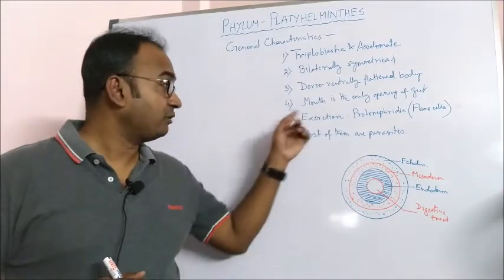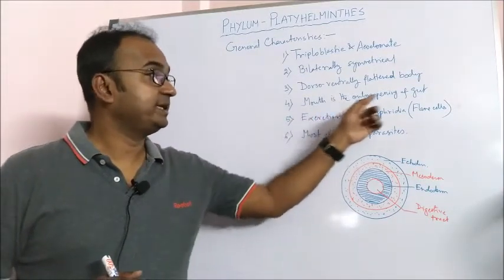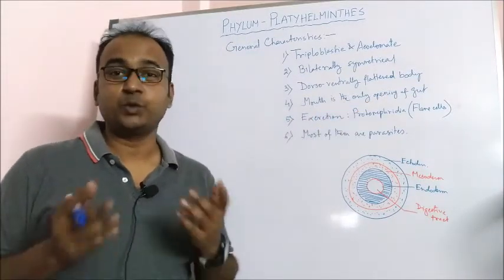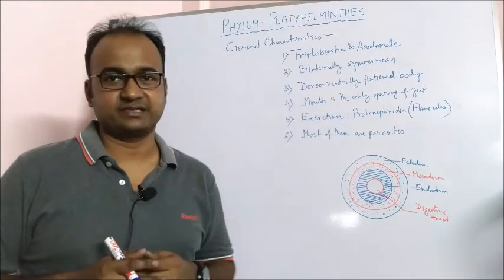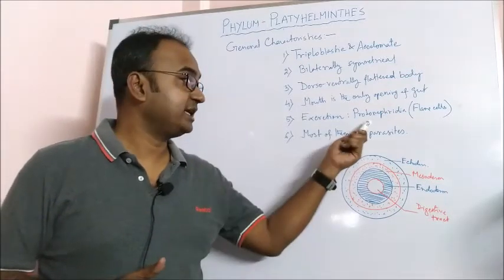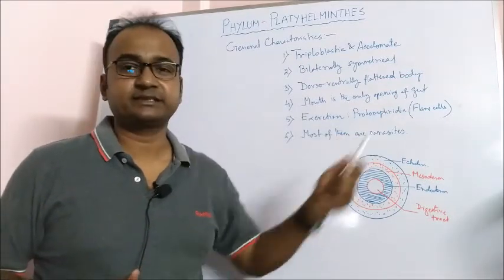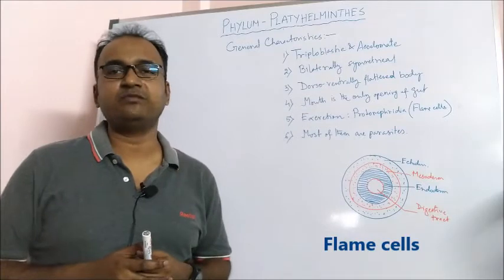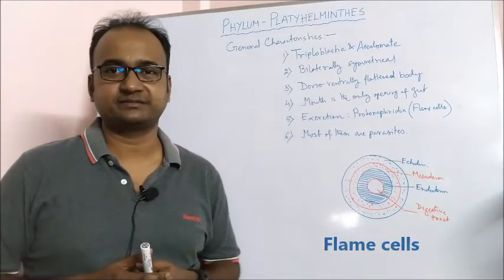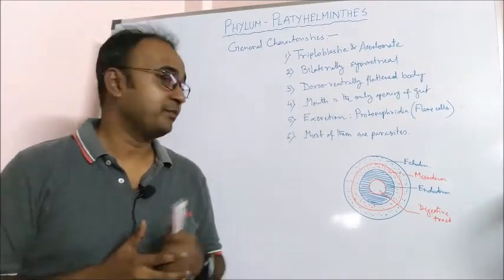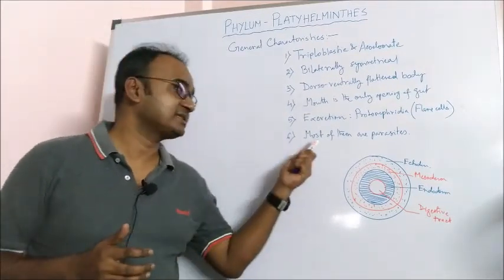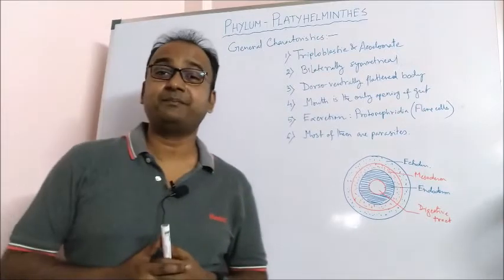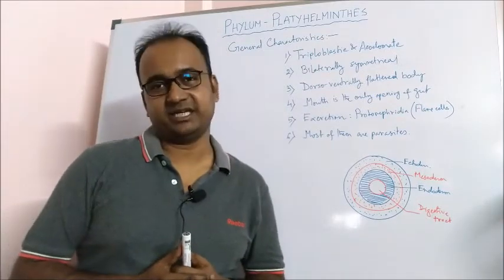The next character: the mouth is the only opening of the gut, so they do not have an anus. Excretion occurs through protonephridia, which consists of a special kind of cells called flame cells. And the last character: most of the animals of this phylum are parasitic in nature.